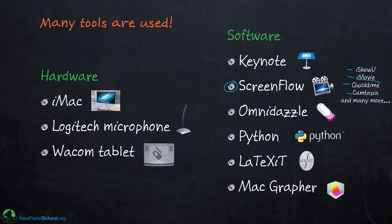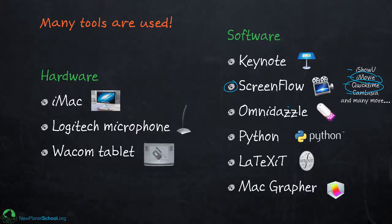QuickTime is great for grabbing things from the screen but doesn't do a lot of editing. iMovie is made for editing, not grabbing from the screen. What's nice about ScreenFlow is that it allows me to record from the screen, do the editing, and upload to YouTube all within the same software package. Is it perfect? Definitely not — it's got bugs. But it's probably among the best that exists today.